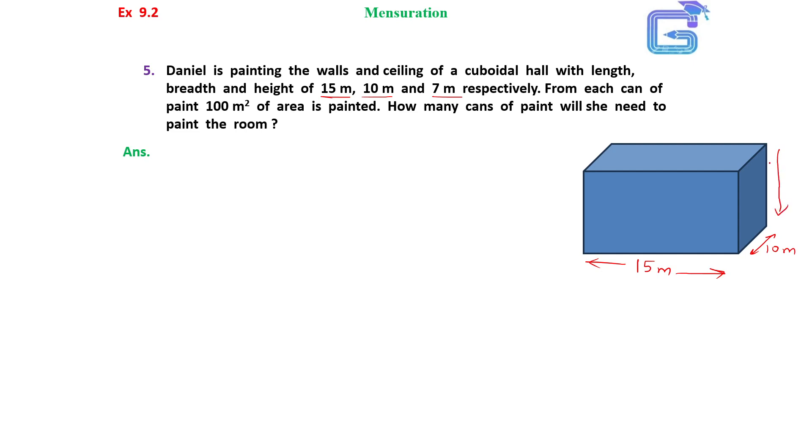So, we have taken a room here in cuboidal shape whose length is 15 meters, breadth is 10 meters and the height of the room is 7 meters. Now, we have to find out how many cans of paint she will need to paint the room.